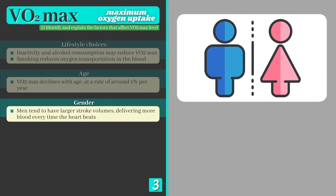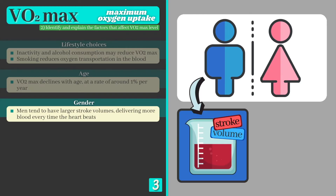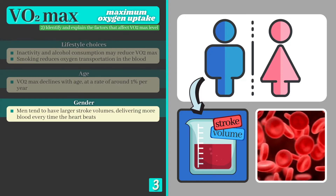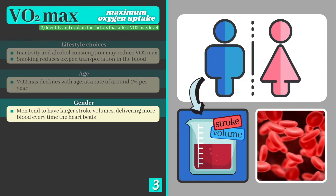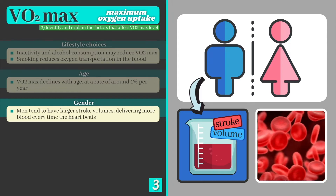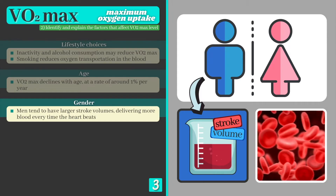Number three is gender. Men are typically able to consume more oxygen than women. This is due to a number of factors, including differences in muscle mass and stroke volume. The larger stroke volume in males means that more blood can be transported around the body every time the heart contracts, increasing the delivery of oxygen to the body's tissues.